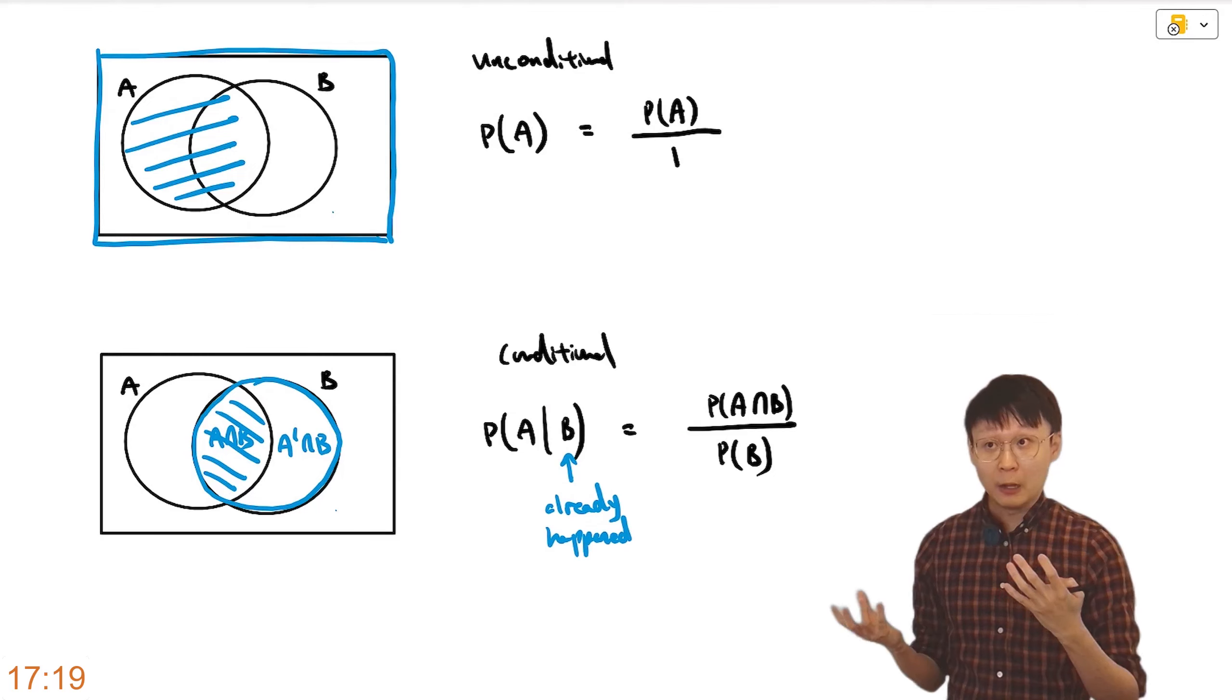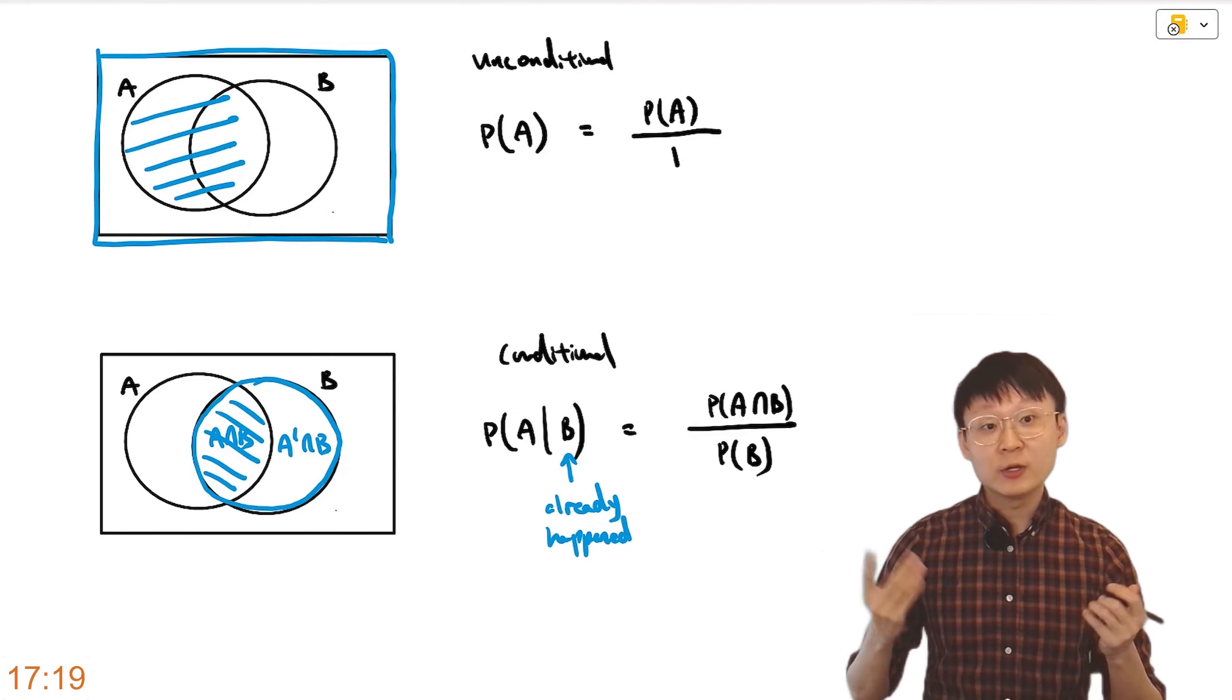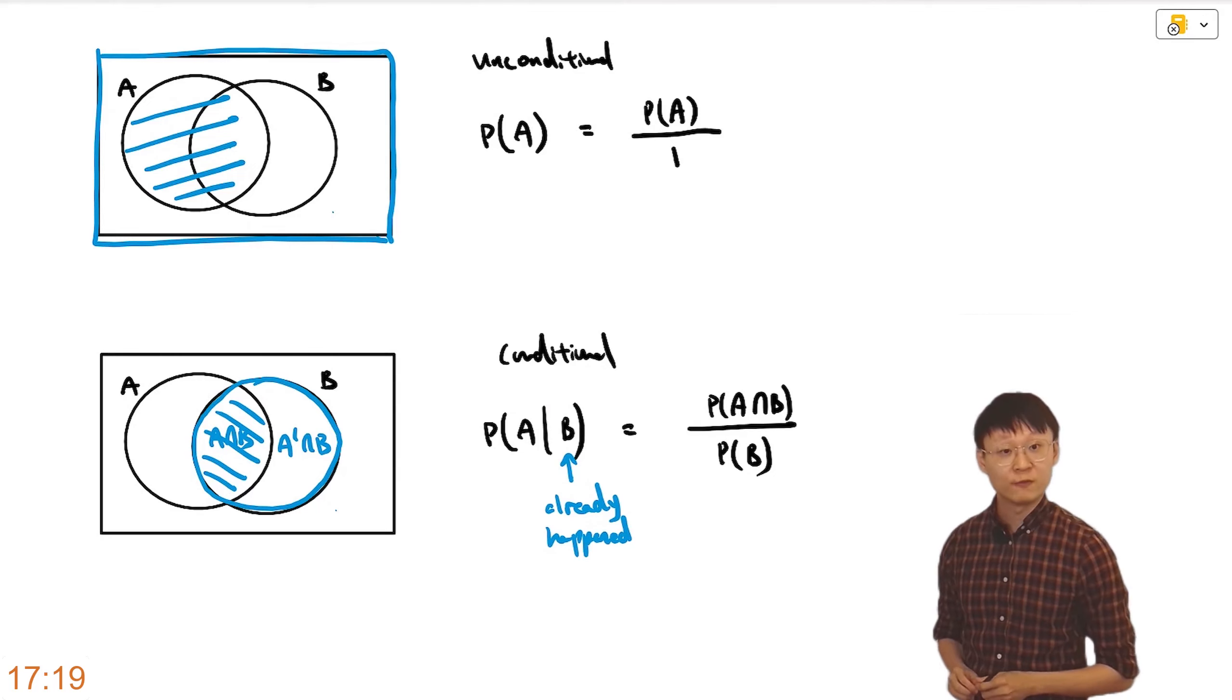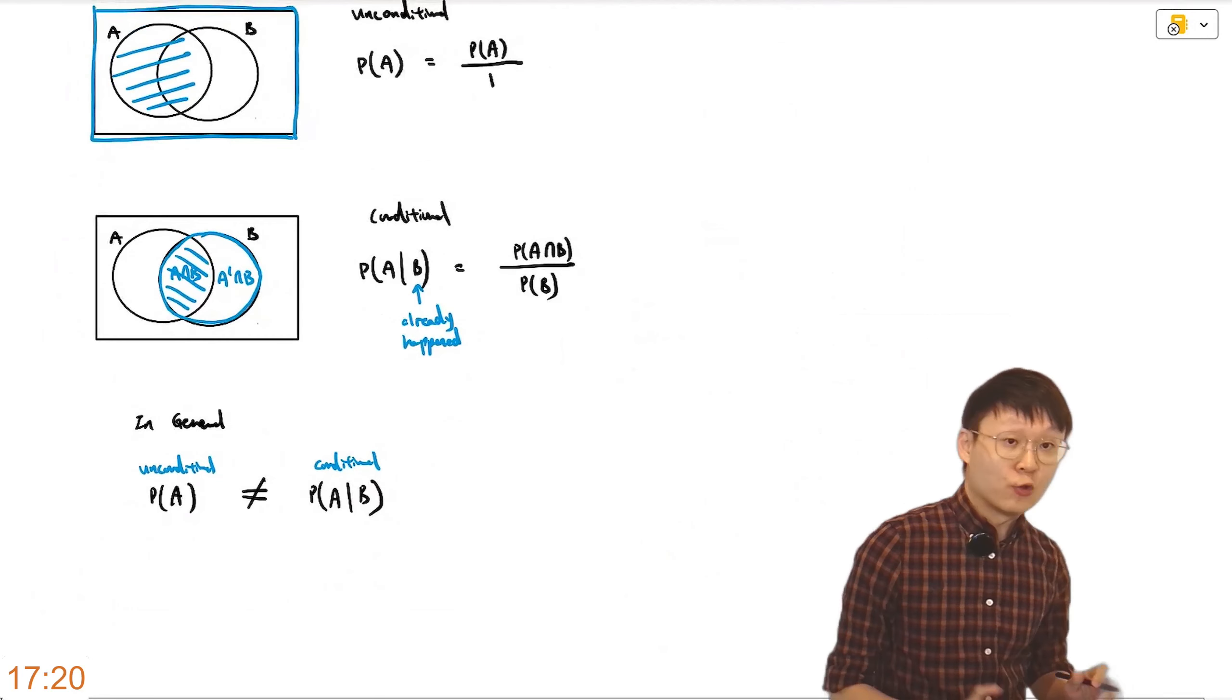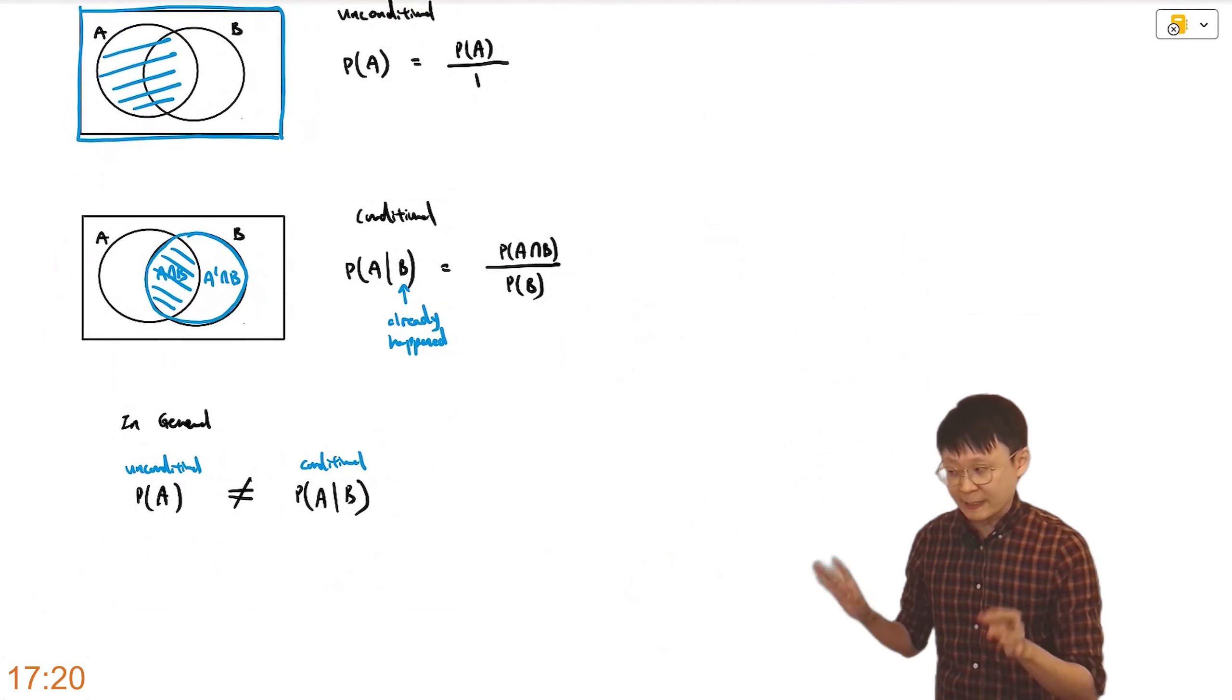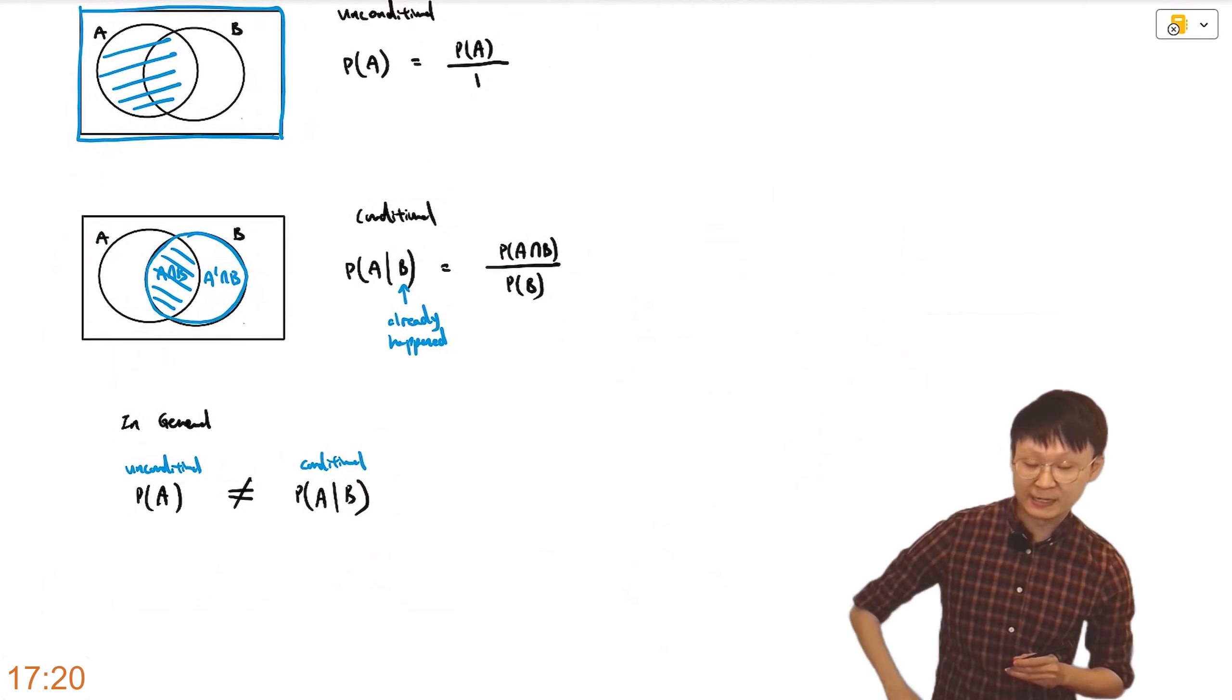Two things become smaller at the same time. We can't tell whether the fraction will become smaller. In general, they are not the same thing. And that's quite important for you to realize. The unconditional is not going to be the same as the conditional. And you must be convinced that they are talking about different things. Because when I visualize it, they don't even look the same. So why would I expect them to give me the same probability?